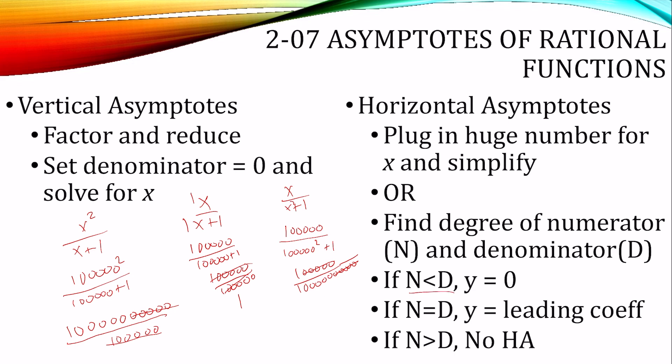So to summarize: if n is less than d, y equals 0. If n equals d, y equals the ratio of leading coefficients. If the numerator degree is greater than the denominator degree, there is no horizontal asymptote.